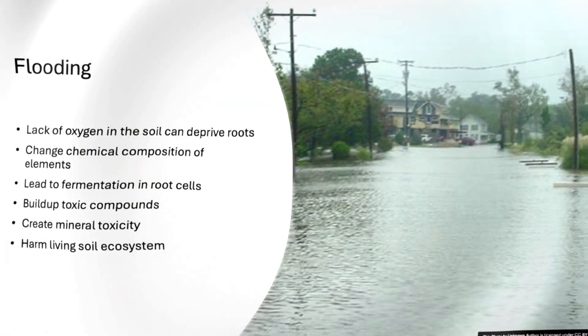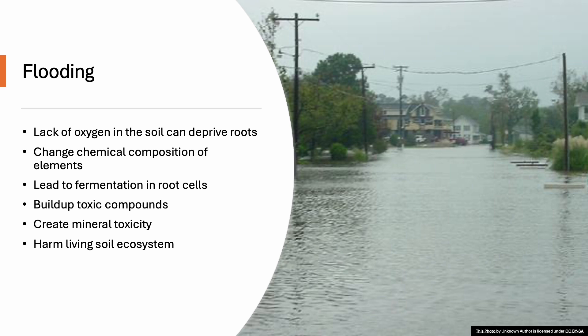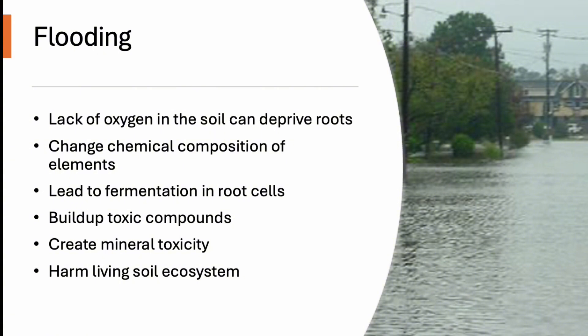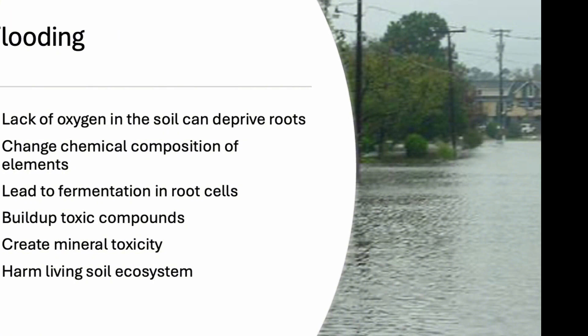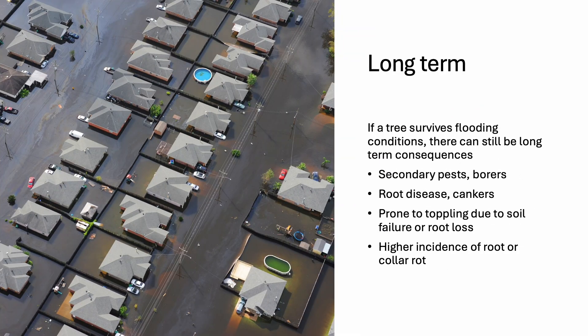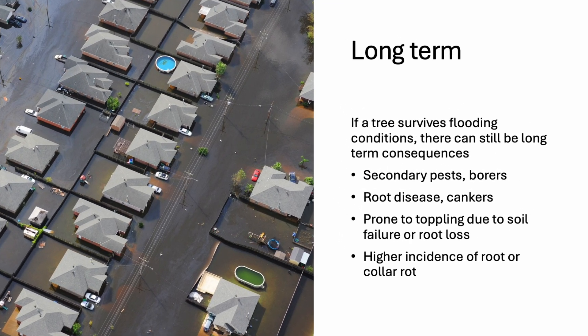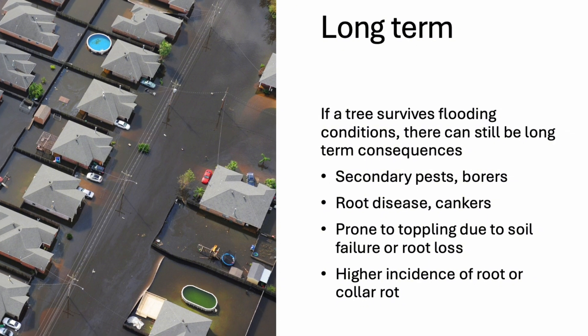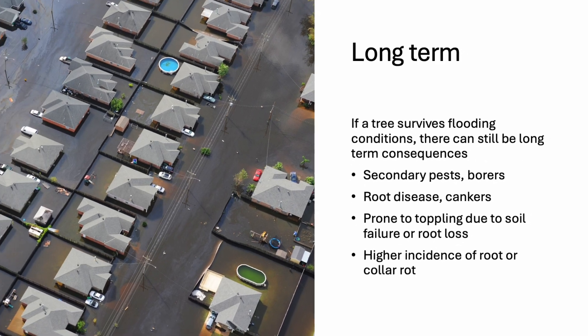Circling back to flooding: flooding can deprive roots of oxygen and cause root cell fermentation, which produces toxic compounds. It can also lead to root diseases and secondary pest issues like pores and cankers. Even if a tree survives the flooding, it may face long-term problems like being more susceptible to toppling or developing collar rot. Improving drainage is the key to preventing these issues.